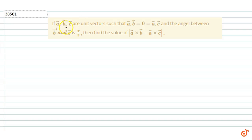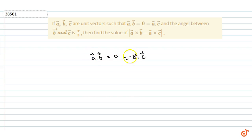The question involves a, b, c — three unit vectors such that a·b = 0 and a·c = 0. Since a·b equals a·c and both equal 0, we can equate them: a·b = a·c = 0. We will now work with these conditions.